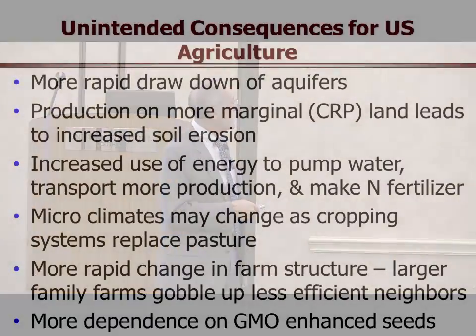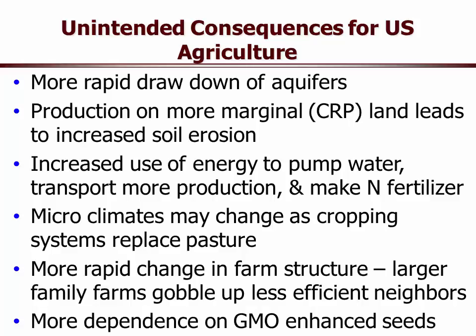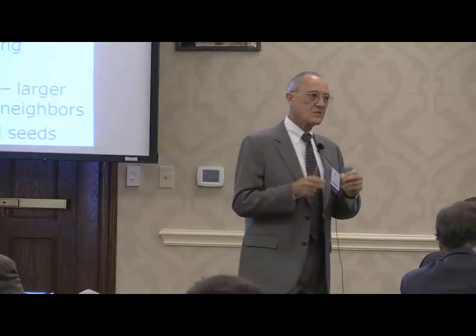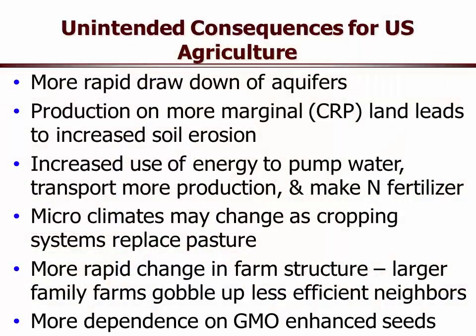Unintended consequences for US agriculture: we'll see a more rapid drawdown of our aquifers all over the US. We're going to see an increase in soil erosion because if we bring in that marginal CRP land, it's going to erode — and that has all kinds of consequences: increased salinity, increased soil movement into our waterways, and filling up our lakes and ponds with sediment. There will be increased energy used to pump water and transport more produce. More trucks and trains will be involved, and it's going to take more energy to produce nitrogen fertilizer. We may see some micro-climate changes as large acreages of pasture land are converted to cropland.